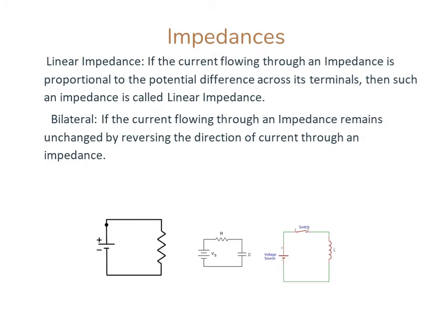Bilateral Impedance: If the current flowing through an impedance remains unchanged by reversing the direction of current through that impedance, it is called a bilateral impedance.